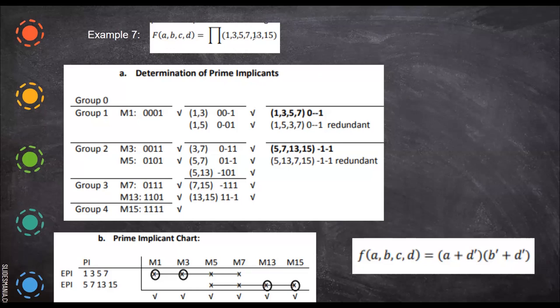So now we have to group all the terms. The other things are the same except the interpretation. So here, group zero, there is no group zero. In group one, you write 001, then three. Three is having two ones and five is having two ones, so those two are grouped. Then seven is having three ones, 13 is having three ones, those two are grouped together.